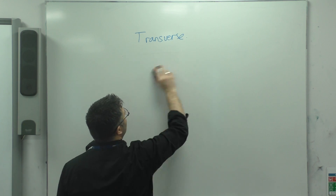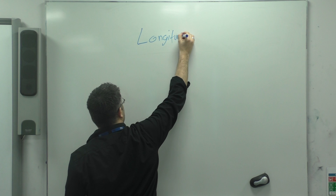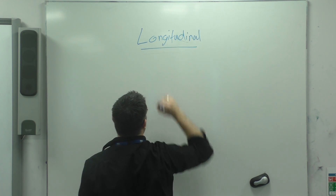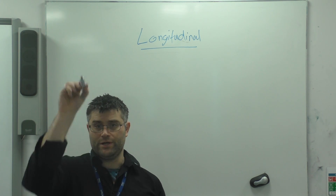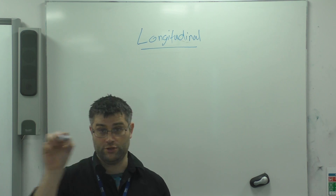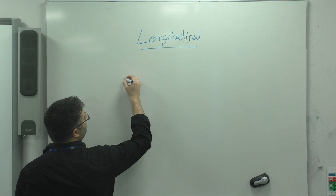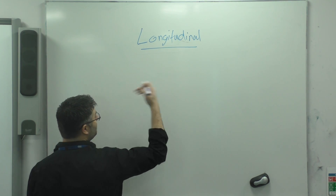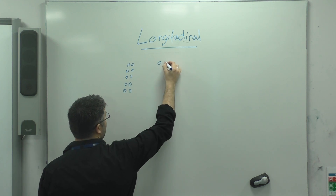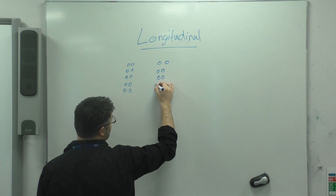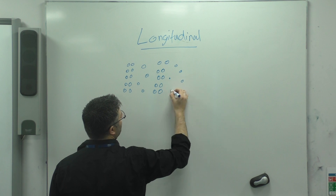Next we're going to look at longitudinal waves. Longitudinal waves are different — they still involve particles. A longitudinal wave does exactly the same thing: it transfers energy from point to point. But instead of the particles moving vertically, they move longitudinally — as the name suggests, they move back and forth in the direction of the energy transfer. It's harder to represent as a wave shape, but we can show it in terms of particles. As a result of particles oscillating backwards and forwards, we get compressions and rarefactions.